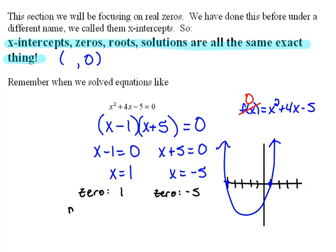Now, the multiplicity, this zero happened one time. This zero happened one time.